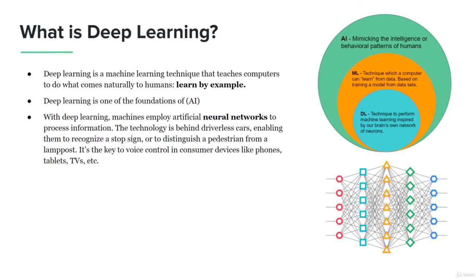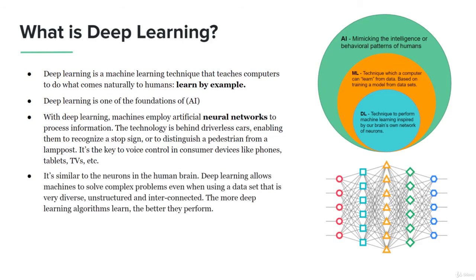With deep learning, machines employ artificial neural networks to process information. The technology is behind the driverless cars that enable them to recognize different signs on the road, whether it's a stop sign or distinguish between a pedestrian or a lamp post or the sidewalk. It's essentially able to learn and distinguish based on the neural networks, similar to the neurons in the human brain. Deep learning allows machines to solve complex problems, even when using a data set that is very diverse, unstructured and interconnected. No matter if it's extremely complex, diverse, highly unstructured, all this data all over the place, the more deep learning algorithms learn, the better they perform with time.